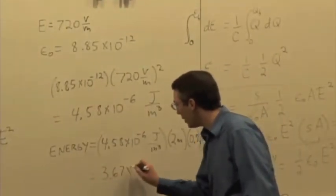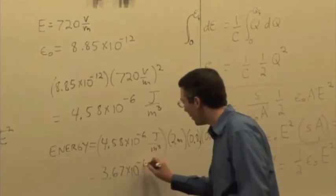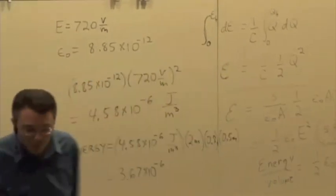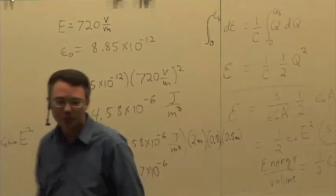And so this times 0.8 gives you what? 3.67 times 10 to the minus 6, which is up there, I hope. Yeah. Answer number 3. So 3 is correct.